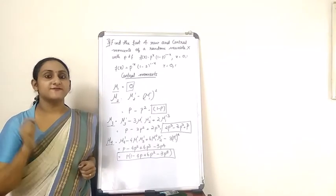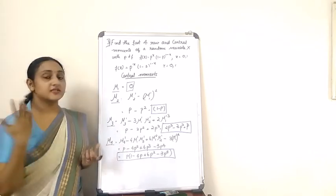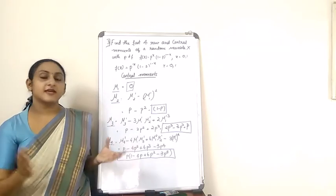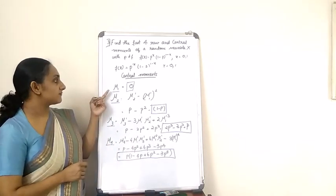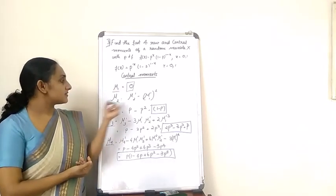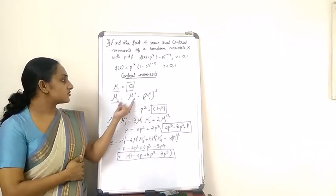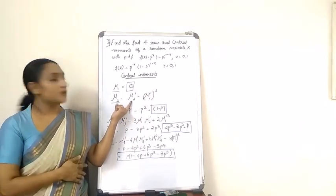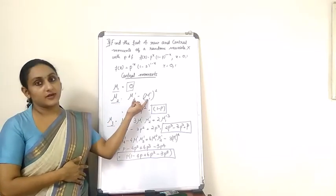Now let's find out the first four central moments. As studied earlier, the first central moment μ₁ is always equal to 0. For μ₂, we know the formula: μ₂ = μ₂' - (μ₁')². This is our variance. We already found that μ₂' = p and μ₁' = p.